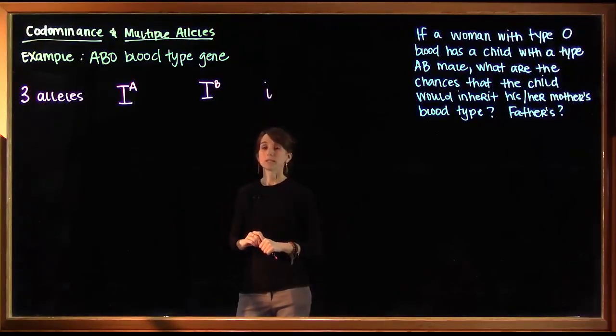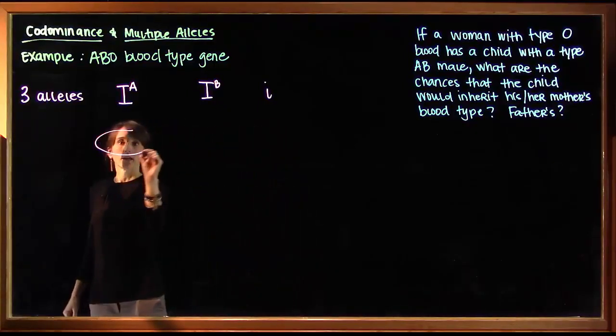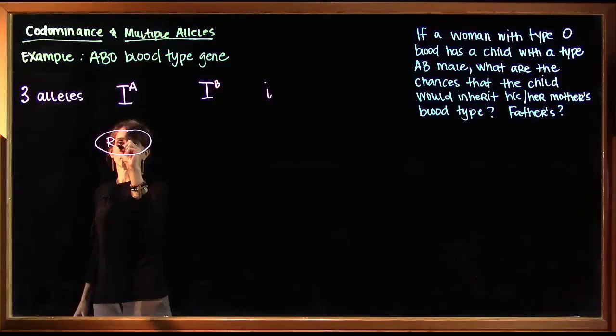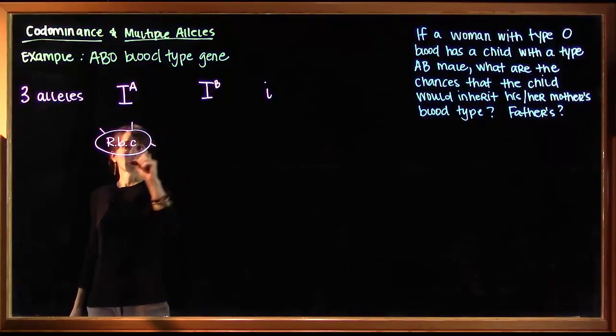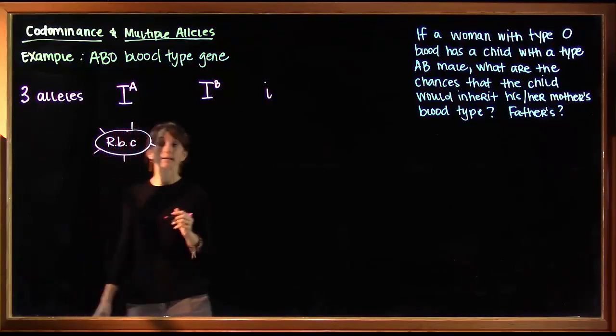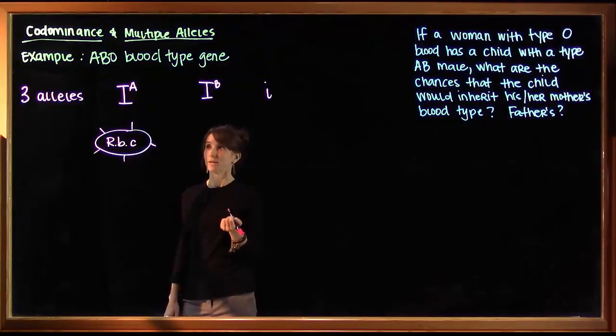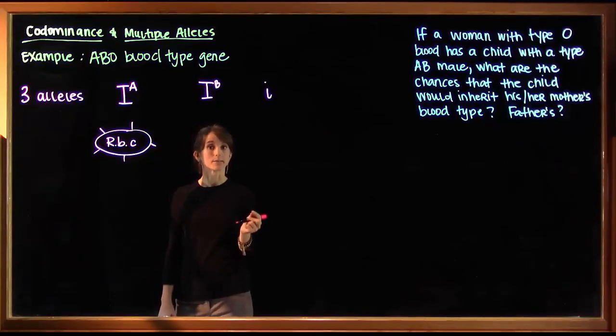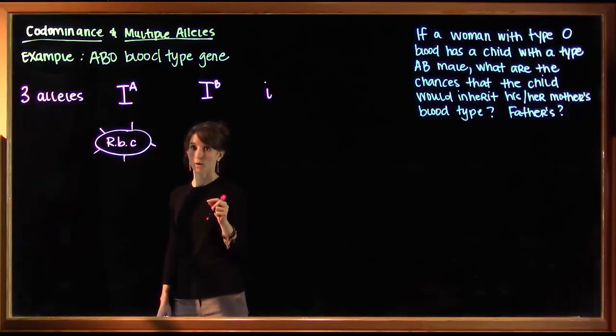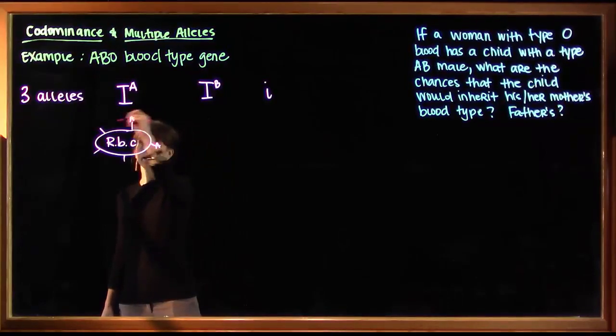Now, what these alleles actually code for, if this is a red blood cell, recall that there are little carbohydrate identifier tags on the outside of your cells. Red blood cells are no different. If a person has an allele for A, that means that they produce an enzyme that slightly modifies these carbohydrate tags. So we'll say these have the A modification.